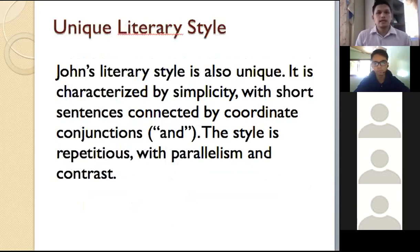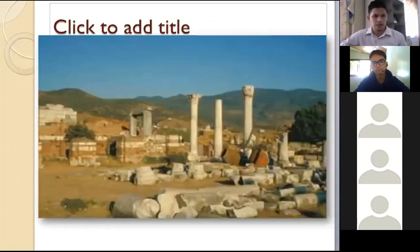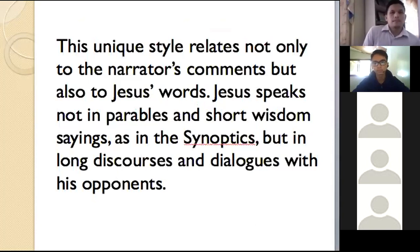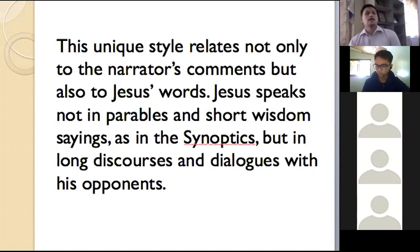John's literary style is also unique. It is characterized by simplicity — short sentences and conjunctions. The style is repetitious. You have parallelism and contrast. Simple words such as abide, believe, witness. There is contrast — light and truth. The ruins of the Church of Saint John in Ephesus still stand today. This unique style relates not only to the narrator's comments but also to Jesus' words. Jesus speaks not in parables or short wisdom sayings as in the synoptics, but in long discourses and dialogues. The book of John doesn't have any parables. Jesus' teaching is placed in long discourses or sermons and his dialogues, his interviews with people and also with his opponents.